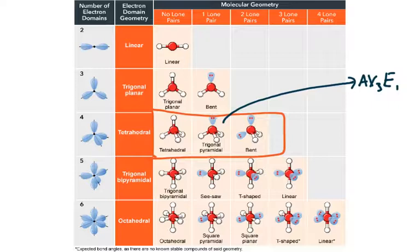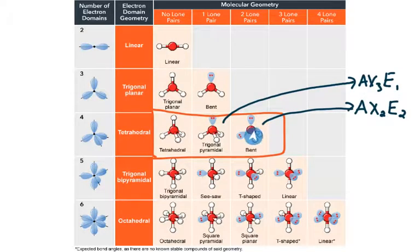What about if the AX notation was AX2E2? Okay. That's what we have here. We have a central atom, two atoms bonded to the central atom, and two lone pairs. The electron domain geometry is still tetrahedral because I have one electron domain here. That's the bond. I have one here. That's a bond. I have one here, a lone pair, and a fourth here, four electron domains.